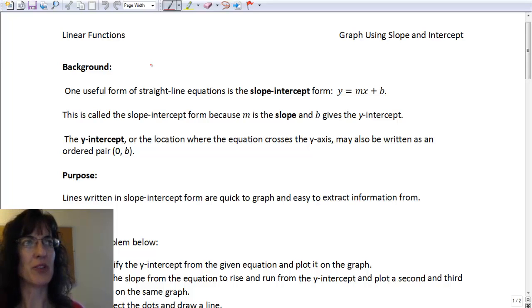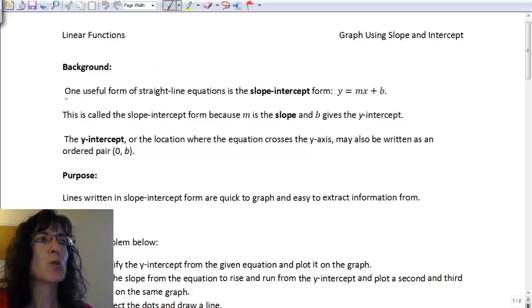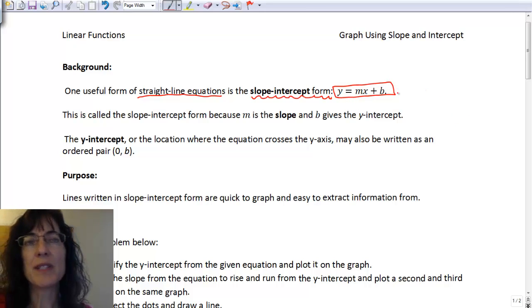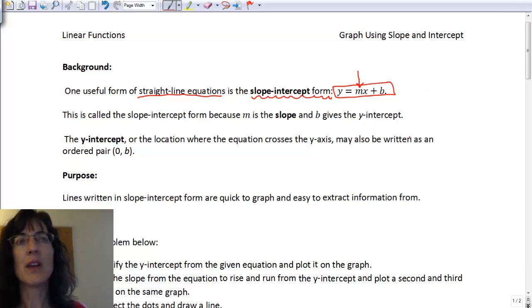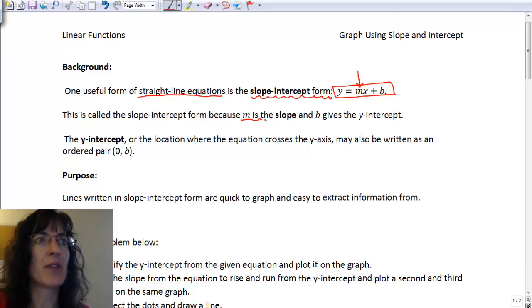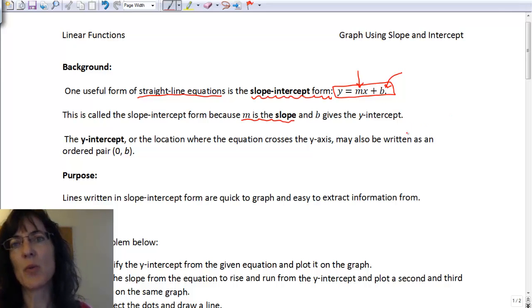Graph using slope and intercept. So we have equations for straight lines, and a very useful form for that equation is the slope-intercept form, written y equals mx plus b. We see that quite often and we like it because the m is our slope, and the b is the y-intercept.